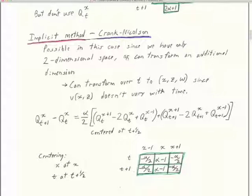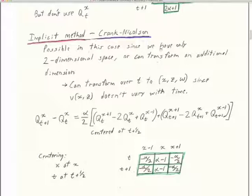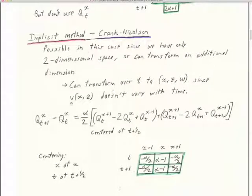The implicit method that our further extrapolation codes will use — especially in lab eight — is called Crank-Nicholson. We can use this because we only have a two-dimensional space, or we can transform an additional dimension. For heat flow we have x and time: one spatial dimension and one time dimension. For our 3D wave extrapolation with x, z, and t, we can transform t to omega and reduce it to finite differencing over just z and x.